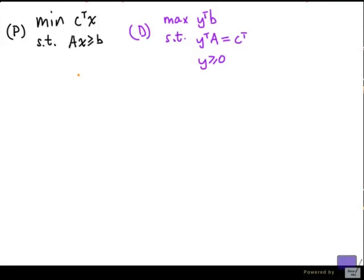In the last video, we saw a problem of this form: minimize c transpose x subject to Ax greater than or equal to b. And its dual problem is a maximization problem: maximize y transpose b subject to y transpose A equal to c transpose, y greater than or equal to 0.